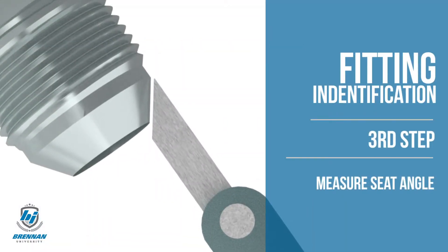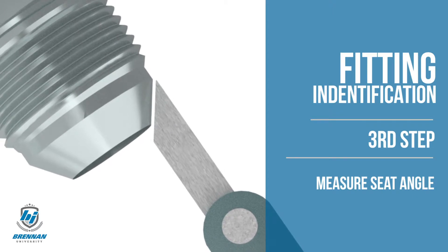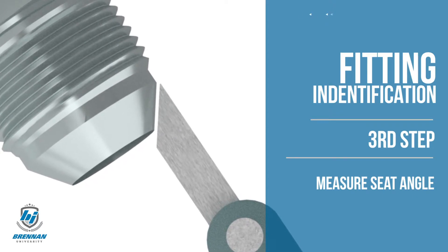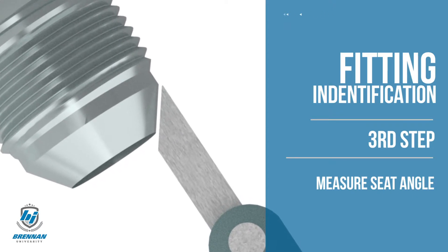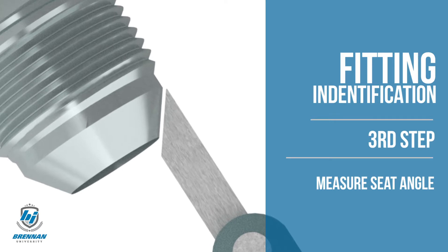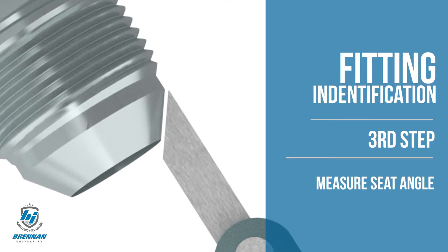Finally, if the connection has an angled, coned, or flared surface, determine the seat angle by using a gauge on the sealing surface.